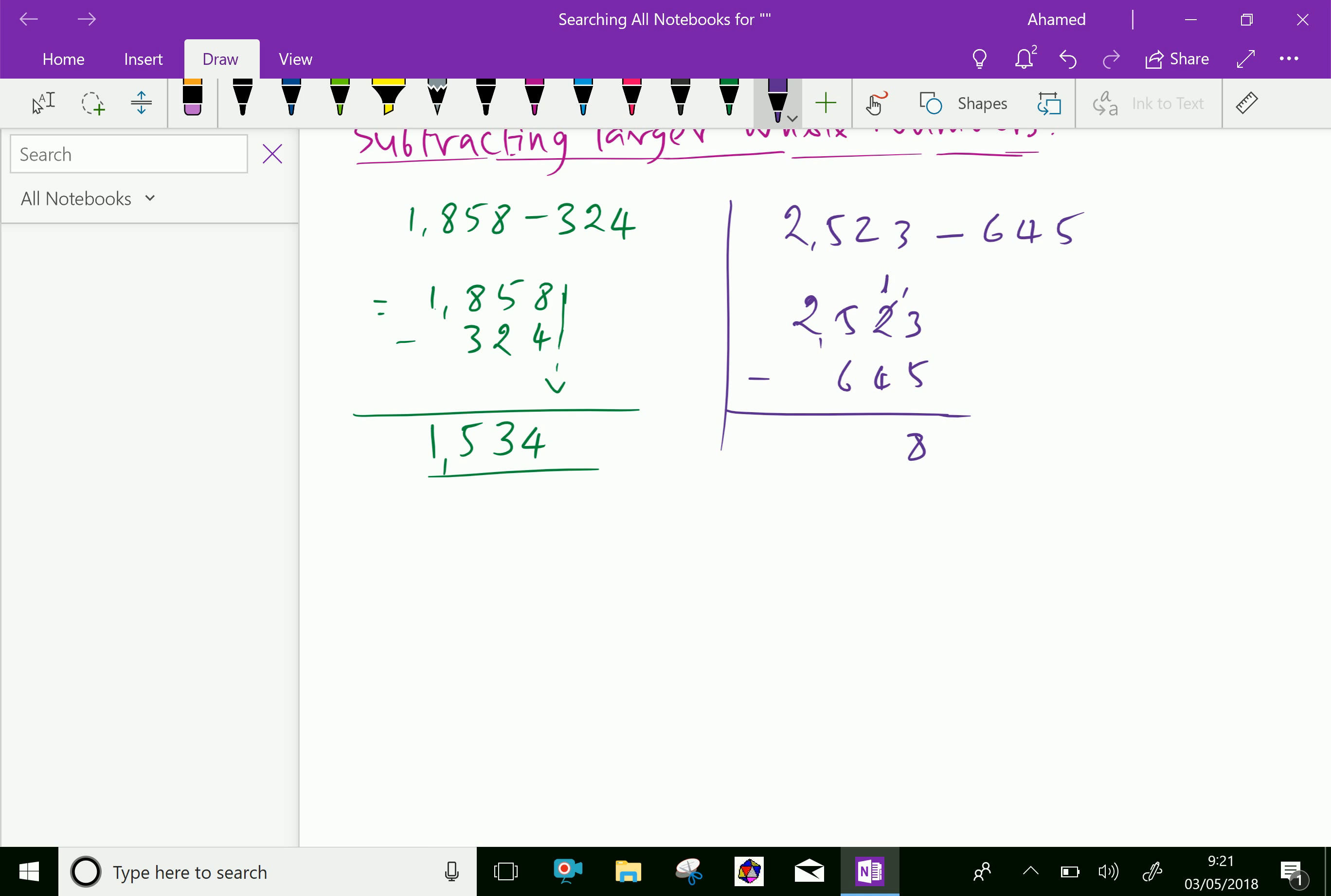Now here it is only 1. 1 minus 4 you cannot subtract directly, so you have to borrow from the next neighbor, which is 5. It becomes 4, and you put 1 here, making it 11. 11 minus 4 is 7.